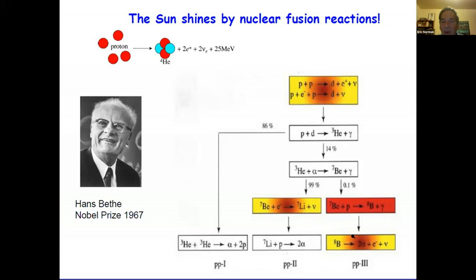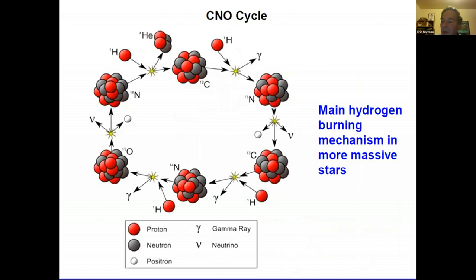This doesn't happen in one step. It's a complicated set of reactions called the PP chain, beginning with two protons combining to make deuterium, a positron, and a neutrino. Bethe also figured out that in more massive stars there is a catalytic process called the CNO cycle: carbon-12 captures a proton making nitrogen-13, which beta decays to carbon-13, captures another proton making nitrogen-14, then oxygen-15, which beta decays to nitrogen-15. Finally, nitrogen-15 captures a proton and breaks apart into helium-4, regenerating carbon-12 as the catalyst.